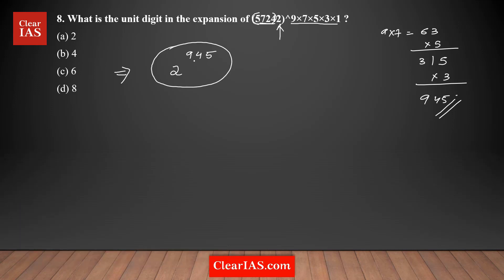So I need to find what is the unit digit of 2 to the power 945. It's not a practical idea to multiply 2 a total of 945 times, so there should be some other logic. In these kinds of scenarios, you need to try to identify a pattern in the powers of 2, focusing only on the unit digit.